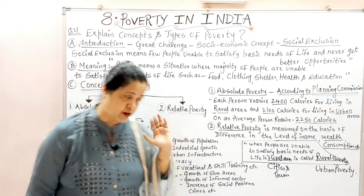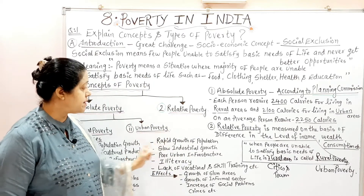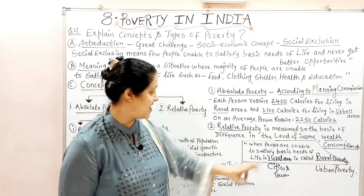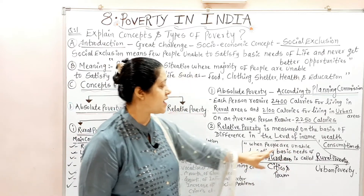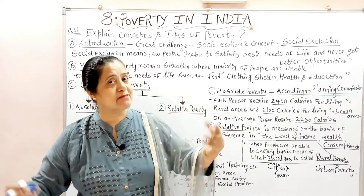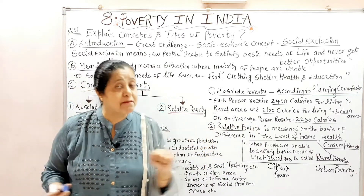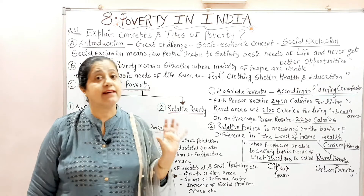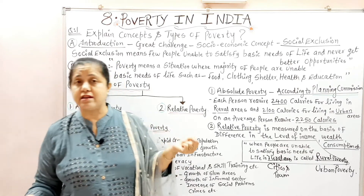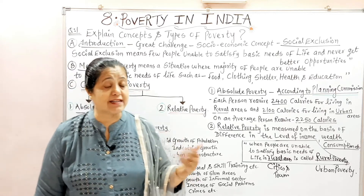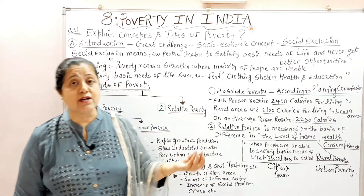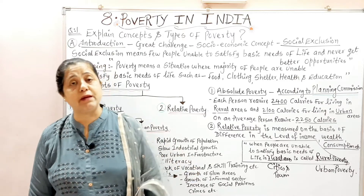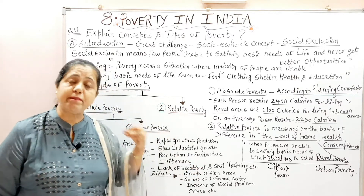Now rural poverty is clear — let's come to urban poverty. The definition of urban poverty: when people are unable to satisfy basic needs of life in cities and towns, that is urban poverty. When we talk about urban poverty — the poor in cities — their housing facilities are poor, better housing is not available, good employment opportunities are not available, proper health facilities and good education are also not available.